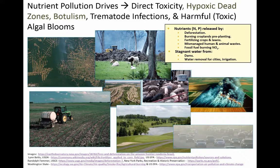Where do the nutrients come from? Deforestation, as seen in this satellite photograph of roads moving into the Amazon, frees up nutrients. Burning croplands, which is done widely, also releases nutrient dumps into the environment. Fertilizing crops, lawns, and golf courses are additional sources. Mismanagement of human and animal waste leaves nutrients free to run into water bodies. And fossil fuel burning that releases nitrogen oxides can also add to algal bloom problems.